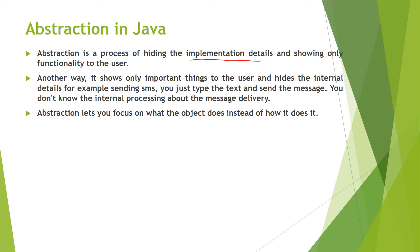Abstraction in Java is a process of hiding the implementation details and showing only the functionality to the user — it shows only what is important and hides the internal details. For example, when you send a WhatsApp or Instagram message to a friend, you just type the text and click send. You don't know how the internal processing happens or how the message is delivered. Whatever is necessary is highlighted; whatever is unnecessary is hidden. This is abstraction — you focus on what the object does instead of how it does it.